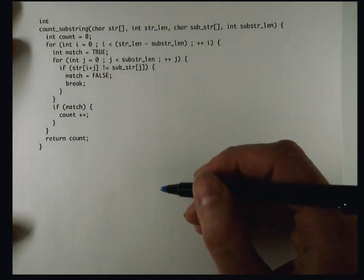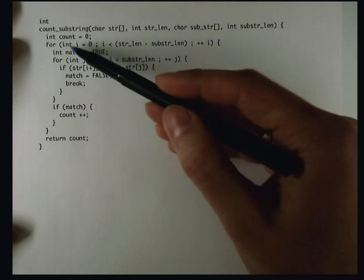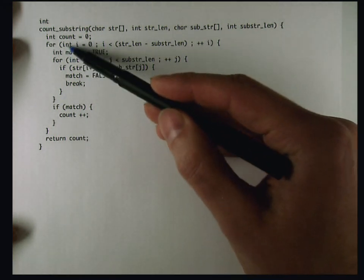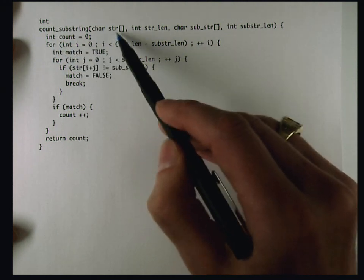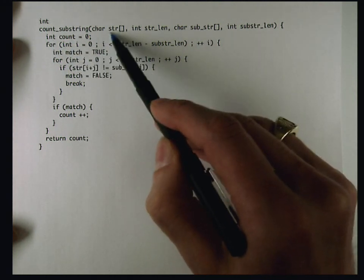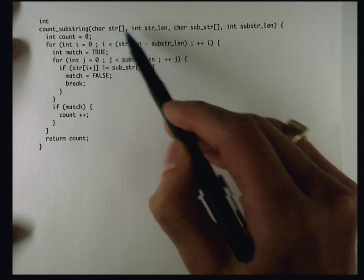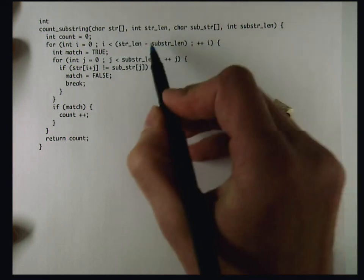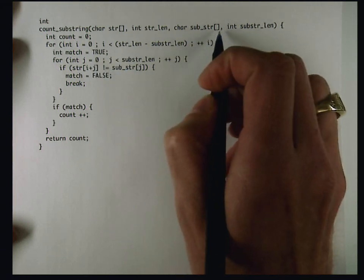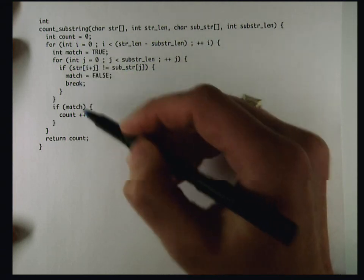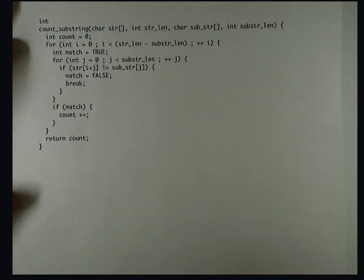This code example is a little more complicated than the last one because it consists of a doubly nested loop. The outer loop is going to iterate over every character of string and check whether that character begins an instance of this substring, which that check is going to be done by the inner loop.